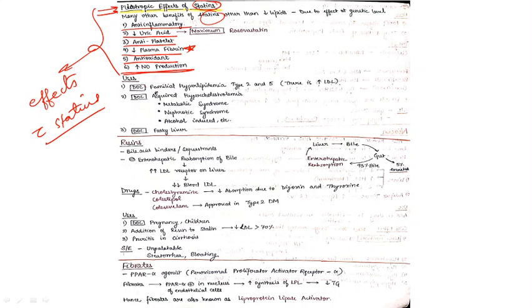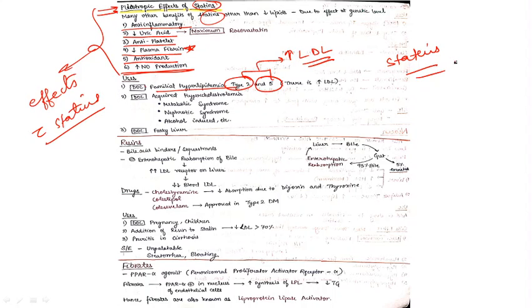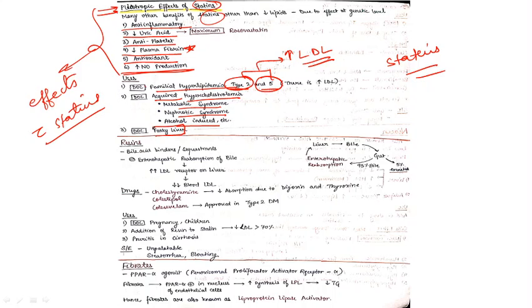Statins are the drug of choice for familial hyperlipidemia type 2 and type 5, because in these two types there is increased LDL and statins cause maximum decrease in LDL. Statins are also drug of choice for acquired hypercholesterolemia seen in metabolic syndrome, nephrotic syndrome, or alcohol-induced hypercholesterolemia, and for fatty liver.